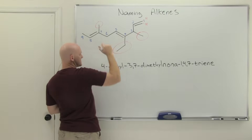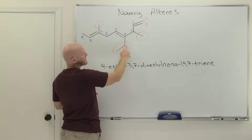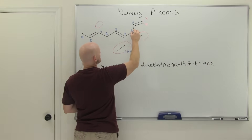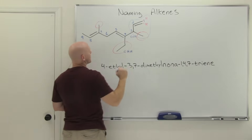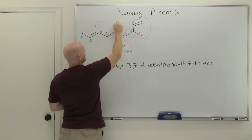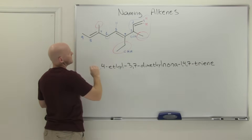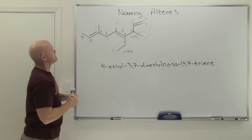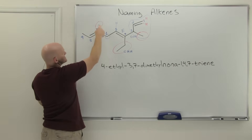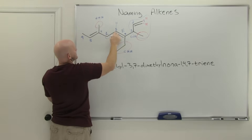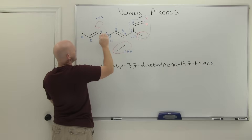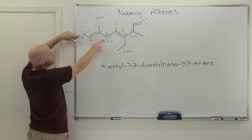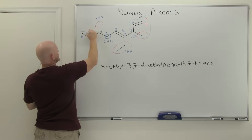For carbon four: on the left sp2 carbon, one attached carbon is bonded to C, H, H while the other is bonded to C, C, H — the C, C, H group wins (carbon beats hydrogen), so that's higher priority. On the right sp2 carbon, it's bonded to a carbon and a hydrogen — carbon wins. The two higher priority groups point 180 degrees apart: that corresponds to E. For carbon seven: the right sp2 carbon has one attached carbon bonded to three H's and another bonded to a carbon and two H's — carbon beats hydrogen, giving higher priority. On the left sp2 carbon, it's bonded to a carbon and a hydrogen — carbon wins. These two higher priority groups are also 180 degrees apart: E configuration.